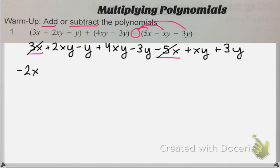Let's find all of our xy's. I have 2xy, 4xy, and 1xy, which gives me 7xy.